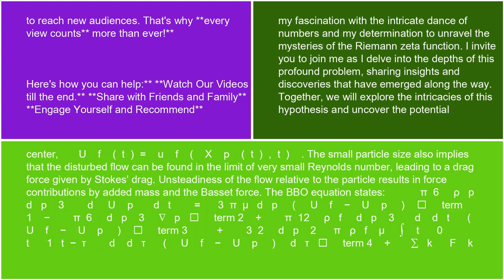Center: uf(t) = uf(xp(t), t). The small particle size also implies that the disturbed flow can be found in the limit of very small Reynolds number, leading to a drag force given by Stokes' drag. Unsteadiness of the flow relative to the particle results in force contributions by added mass and the Bassett force. The BBO equation states: